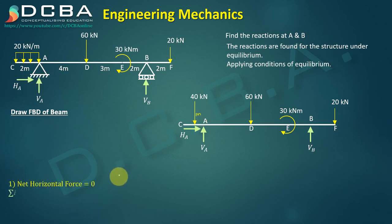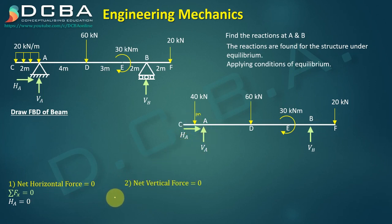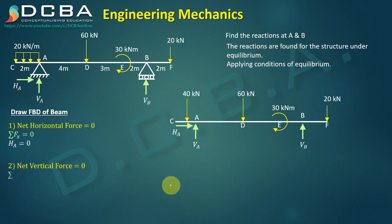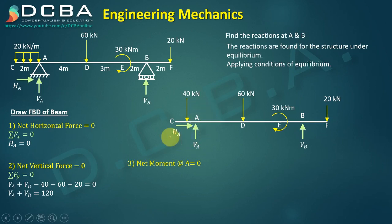Applying equilibrium conditions: ΣFx = 0 gives HA = 0 (no horizontal forces). ΣFy = 0 gives minus 40 + VA minus 60 + VB minus 20 = 0, so VA + VB = 120 kN. Next, we apply ΣM at A = 0 to eliminate VA and HA.